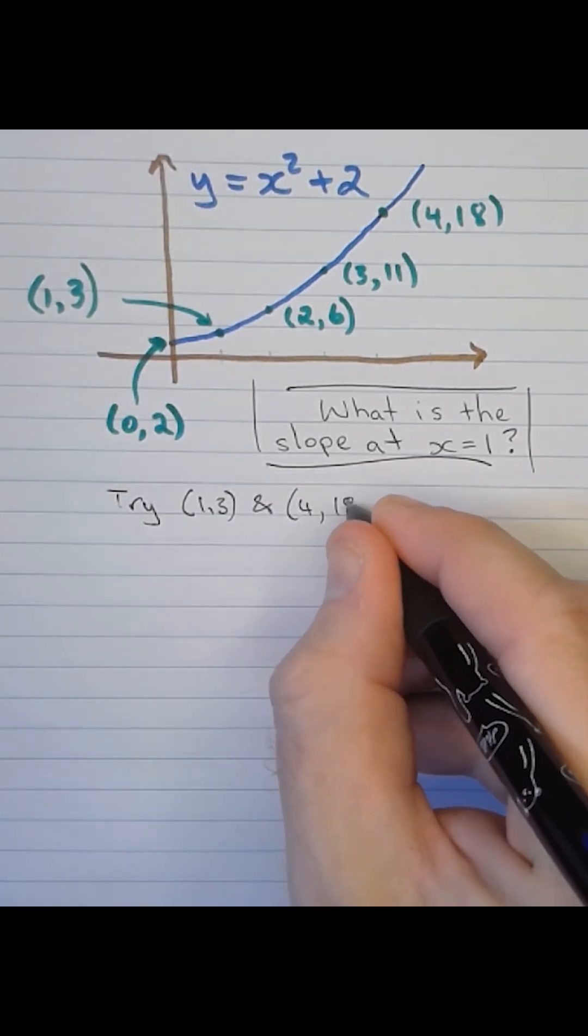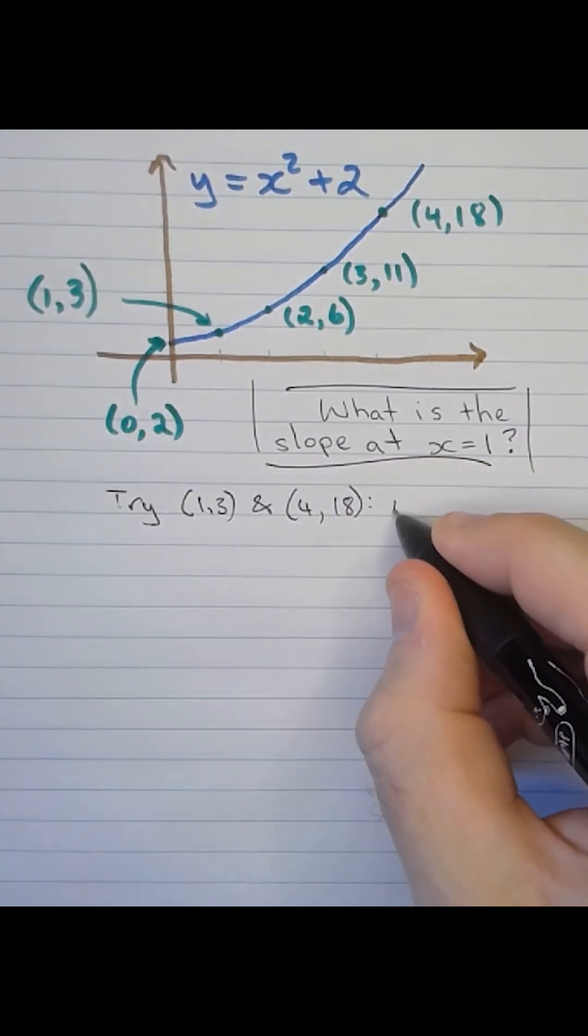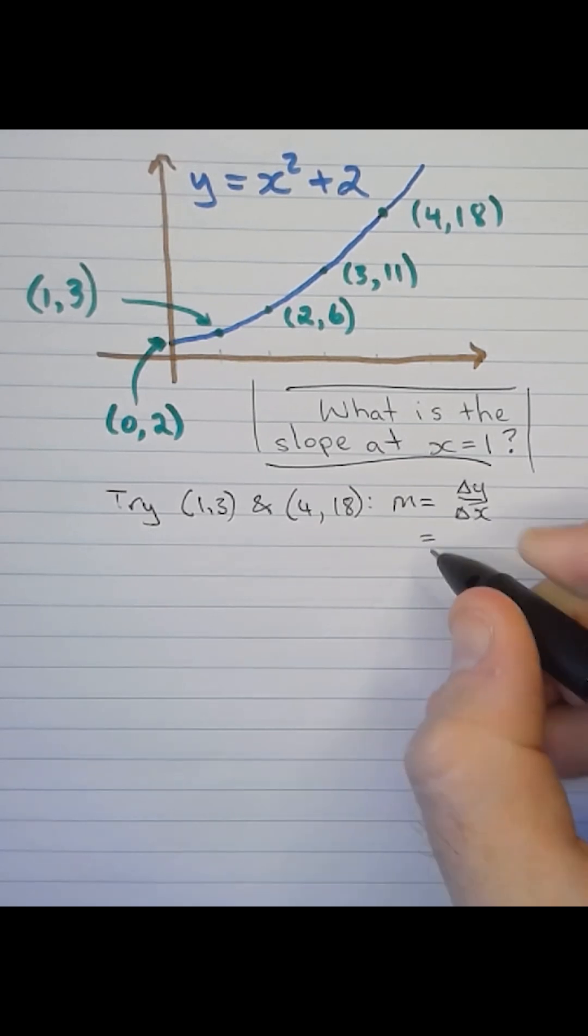So let's try point (1, 3) and (4, 18). This would give us delta y over delta x, 15 over 3, which is 5.